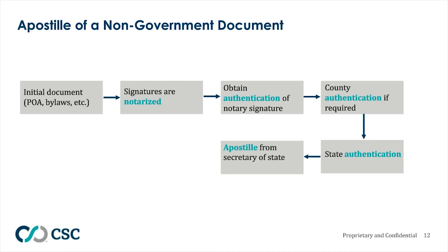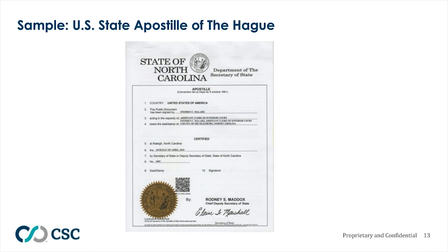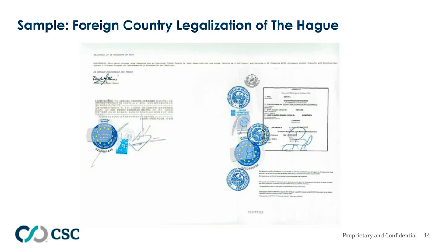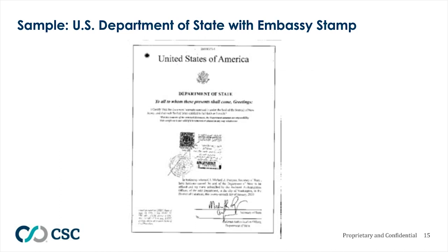Now let's review some document samples. A U.S. State Apostille is a simple one-stop process in most states — for example, the attached is a certified document issued by the State of North Carolina for a country party to the Hague. For foreign country legalization, if a country is non-party to the Hague and must be legalized at multiple levels, it can have several different stamps. The U.S. Department of State with embassy stamps example shows the U.S. Department of State verifying the first step for a non-Hague country before it goes to the consulate.